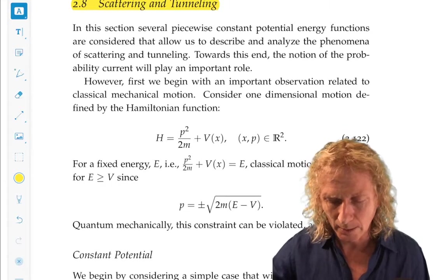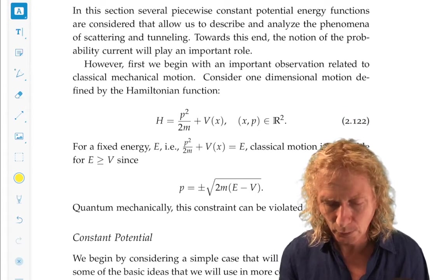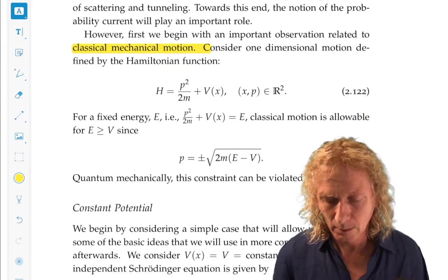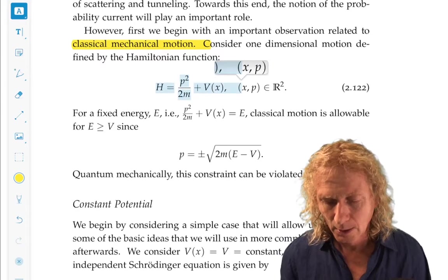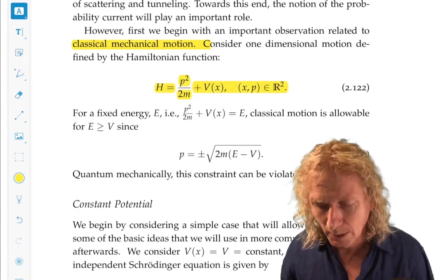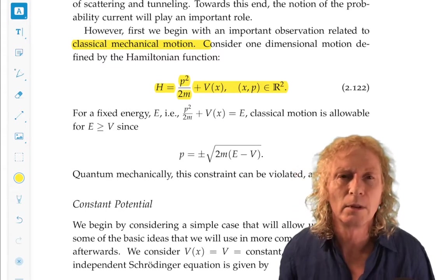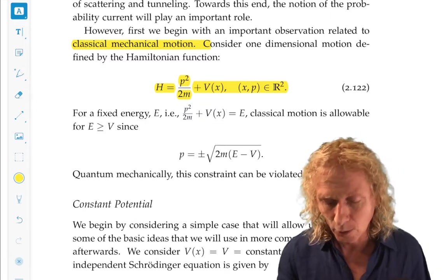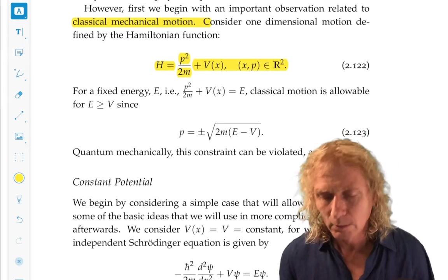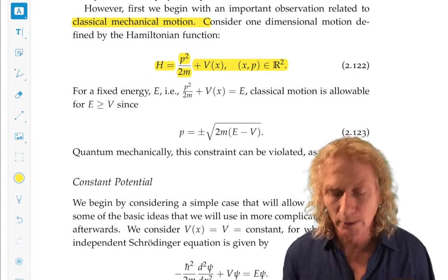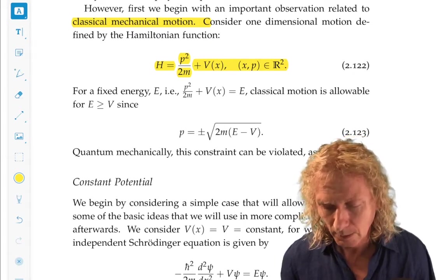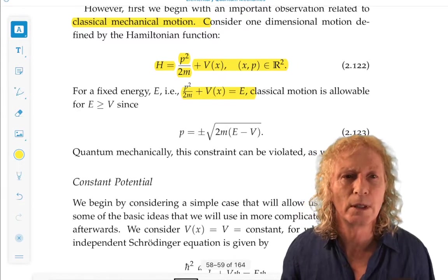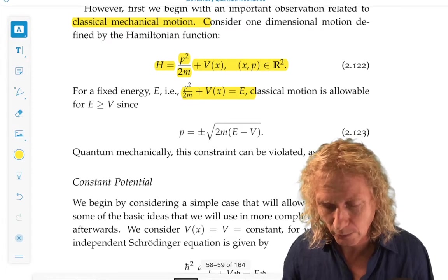Before we get into that, let's discuss some considerations related to classical mechanics. In particular, let's consider the typical Hamiltonian kinetic plus potential energy in two dimensions: one space dimension x and the corresponding momentum. Energy is conserved classically, the Hamiltonian. So let's consider a fixed energy surface: p squared over 2m plus V of x equals E.